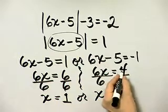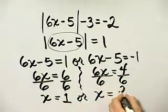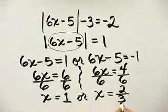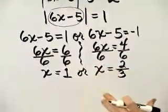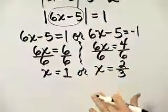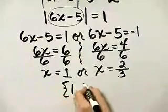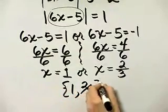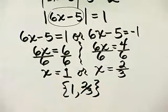Let's simplify 4 over 6: 4 divided by 2 is 2, and 6 divided by 2 is 3. So my solution set is the set containing 1 and also 2 thirds. Both of these are solutions to the original equation.